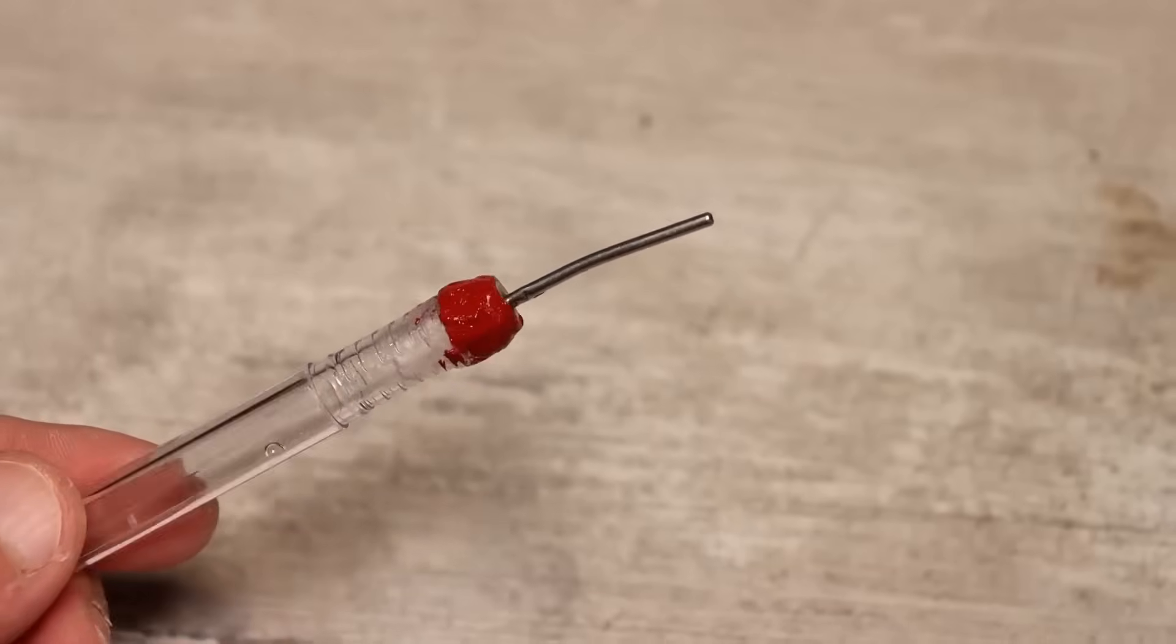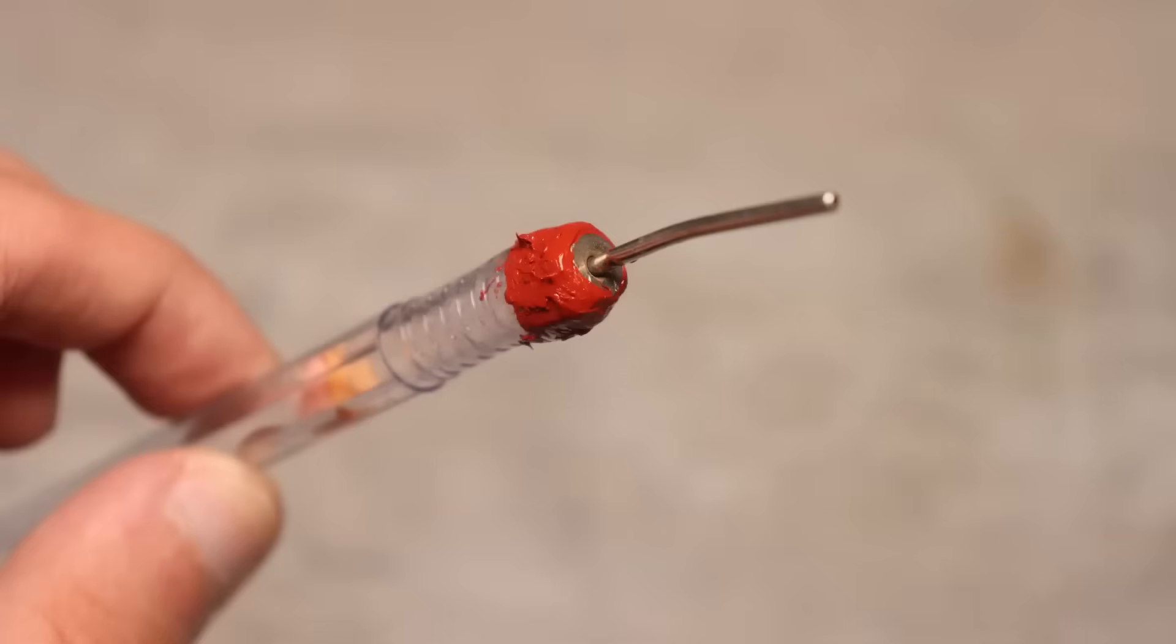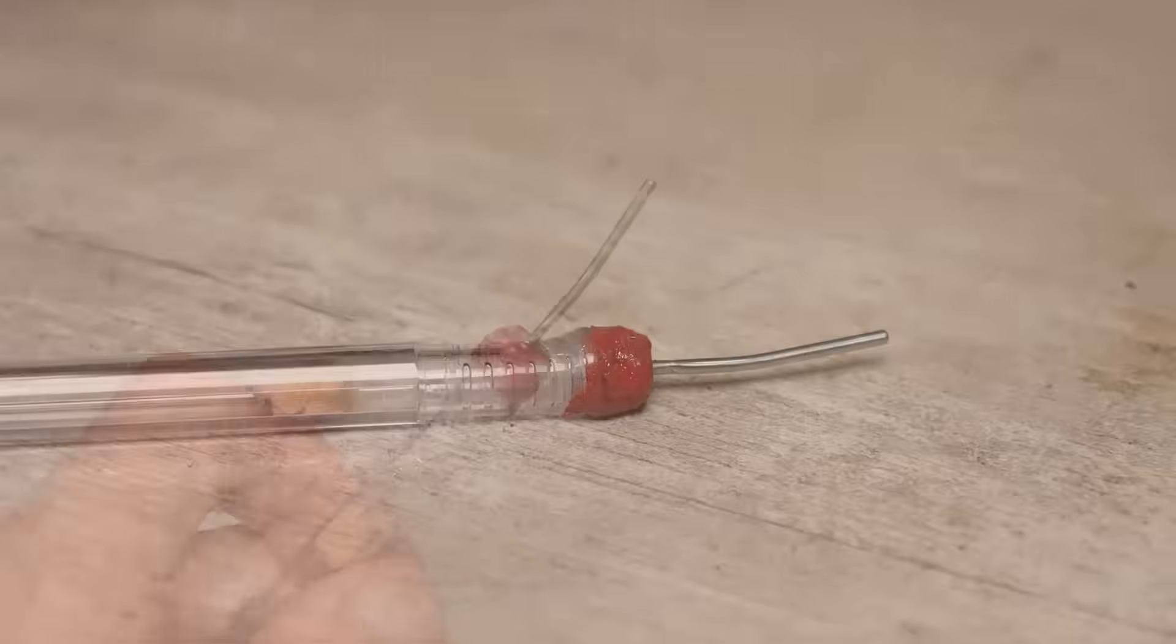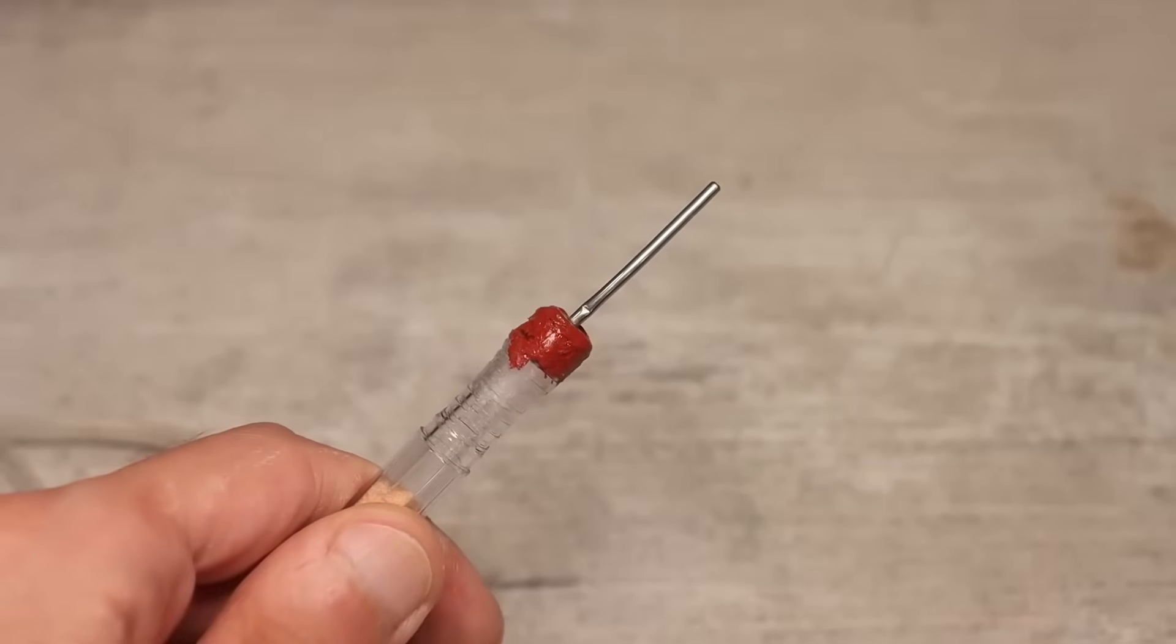Then I carefully applied sealant to the threaded part of the needle and put it in place. It didn't turn out very pretty, but at least we didn't have to use additional transitions. Everything is as budget friendly and simple as possible. The needle can be bent at any desired angle. Just be careful so that the plastic doesn't break. The walls at this point are already very thin.